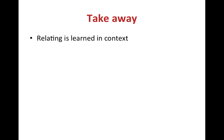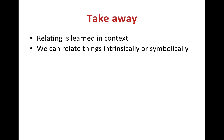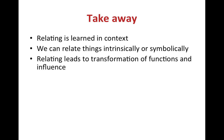Here is a summary of the main points from this tutorial. We learn to relate things under the influence of contextual cues. These contextual cues can be applied according to intrinsic characteristics — like when we say a black cat and a black dog are similar based on their color — which is called intrinsic relating. We can also apply contextual cues regardless of intrinsic characteristics — like when we say a white mourning dress is the same as a black mourning dress — which is called symbolic relating. Relating leads to the transformation of functions of the things being related, which in turn influences the way we respond to them. For example, if I show you a chocolate cake and say 'it's good,' I will probably increase the chance that you will eat it.